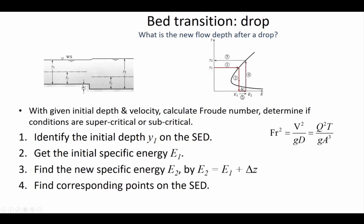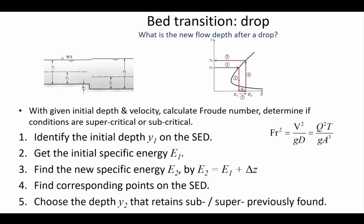You find the new specific energy by going over the amount of delta Z, then you go up and you've got two crossings — the supercritical depth and the subcritical depth. Which new depth to choose depends on whether conditions were supercritical or subcritical at location 1. Since conditions were subcritical, we go all the way up to the second crossing and then to the left to find the new depth Y2. So the procedure is: go over to the specific energy diagram, go down, increase by delta Z, back up, and find Y2.